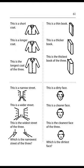Page 61. This is a short coat. This is a longer coat. This is the longest coat of the three. This is a thin book. This is a thicker book. This is the thickest book of the three. This is a narrow street. This is a wider street. This is the widest street of the three. Which is the narrowest street of the three? This is a dirty face. This is a cleaner face. This is the cleanest face of the three. Which is the dirtiest face?